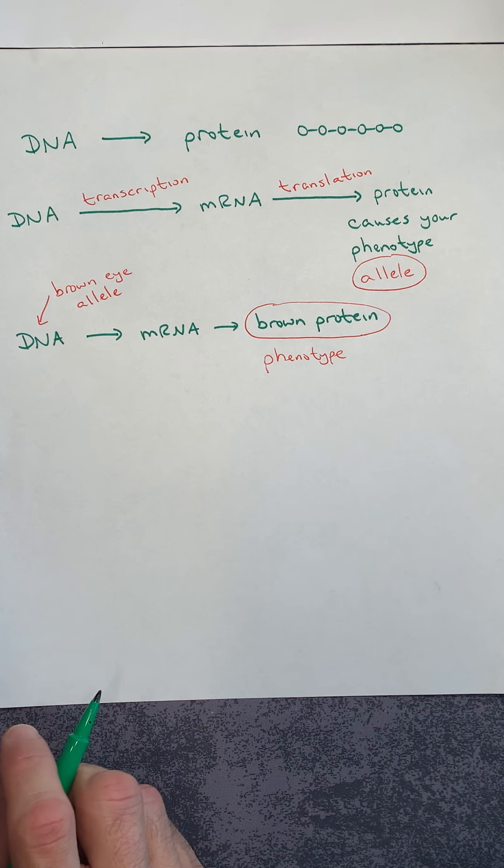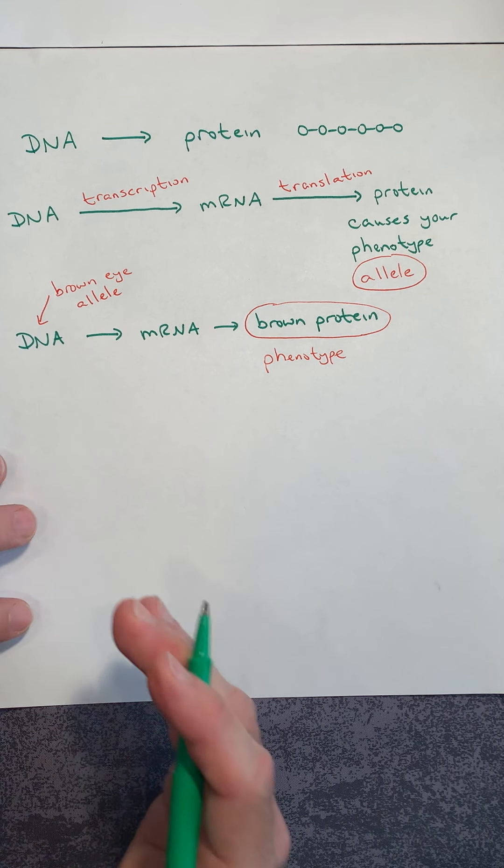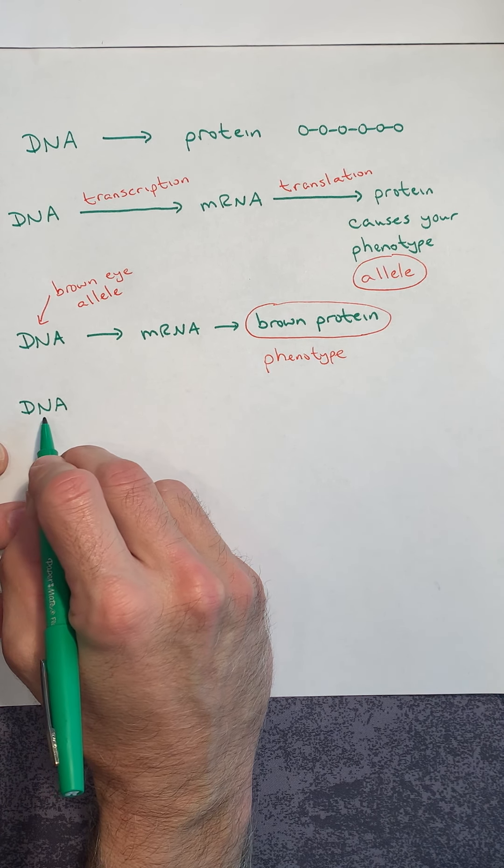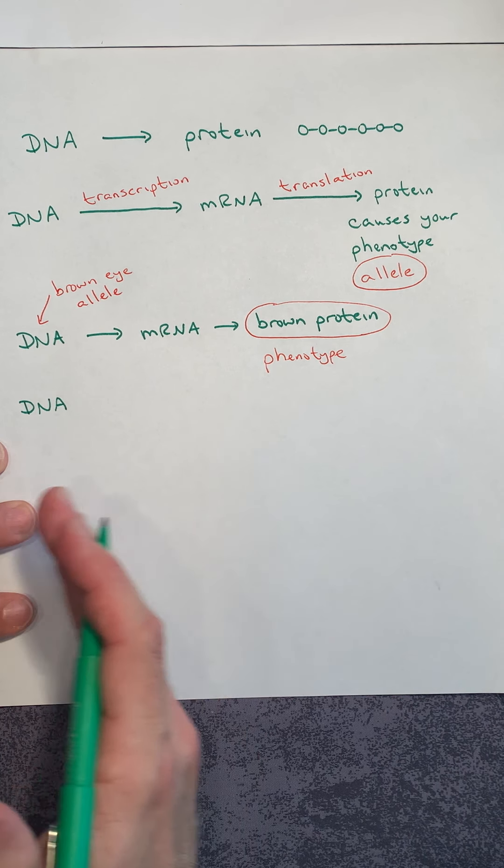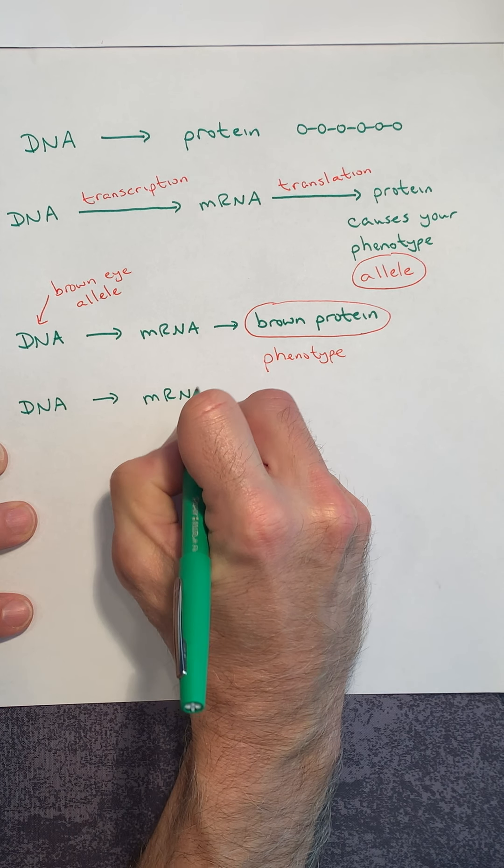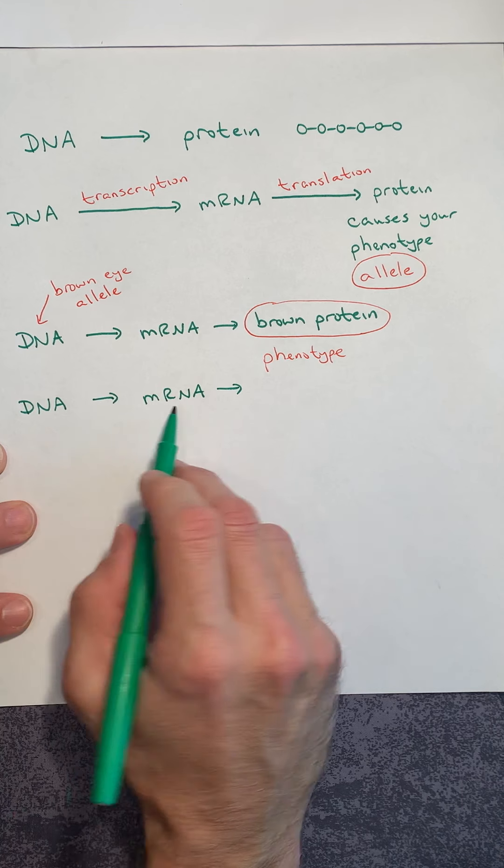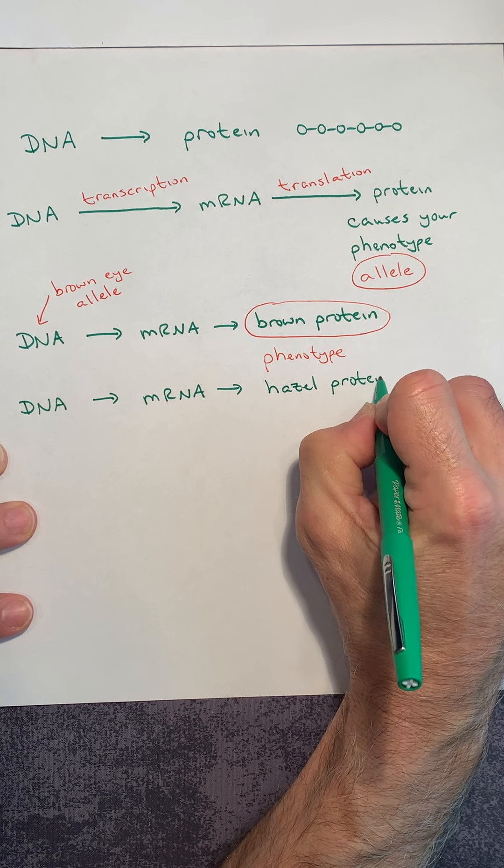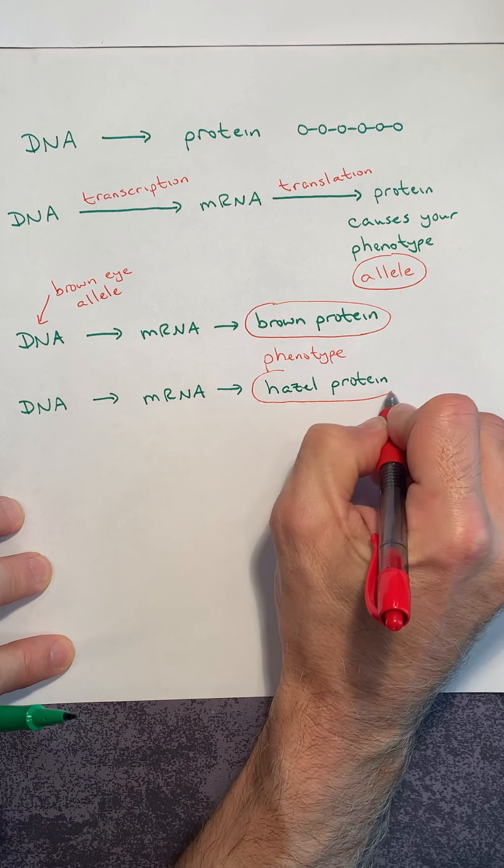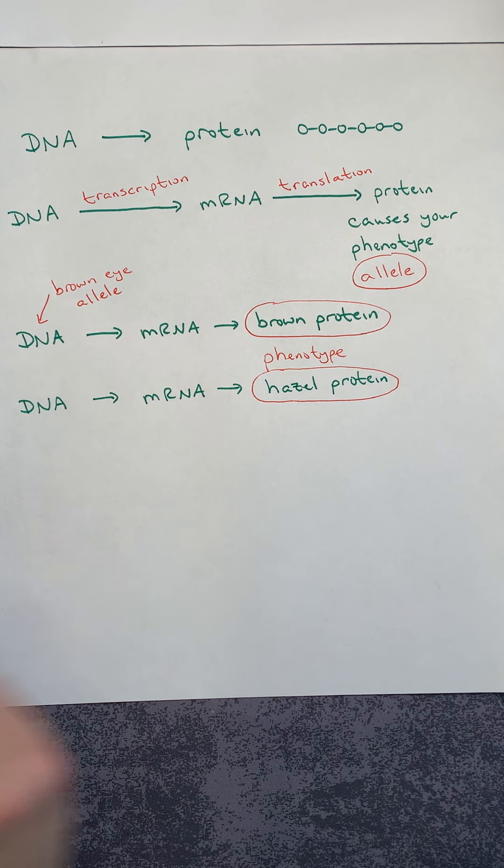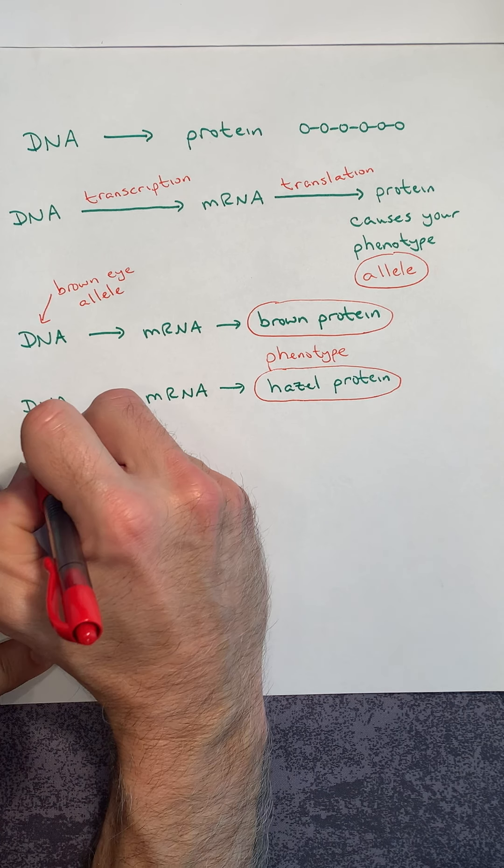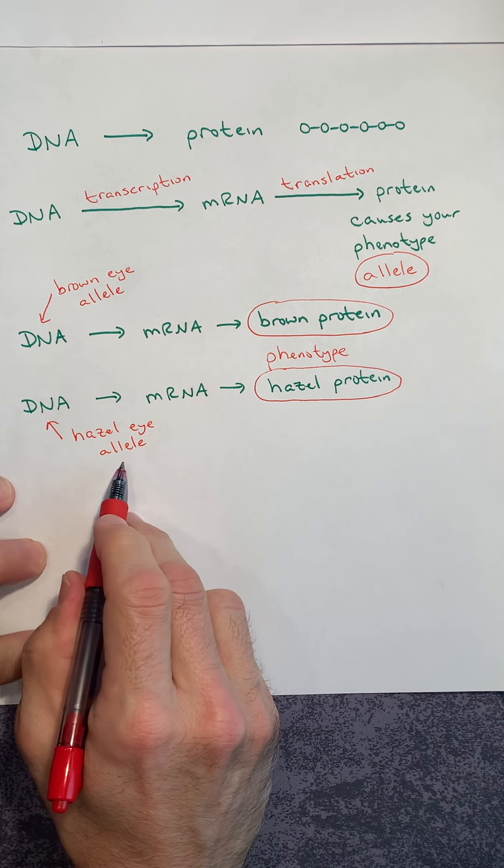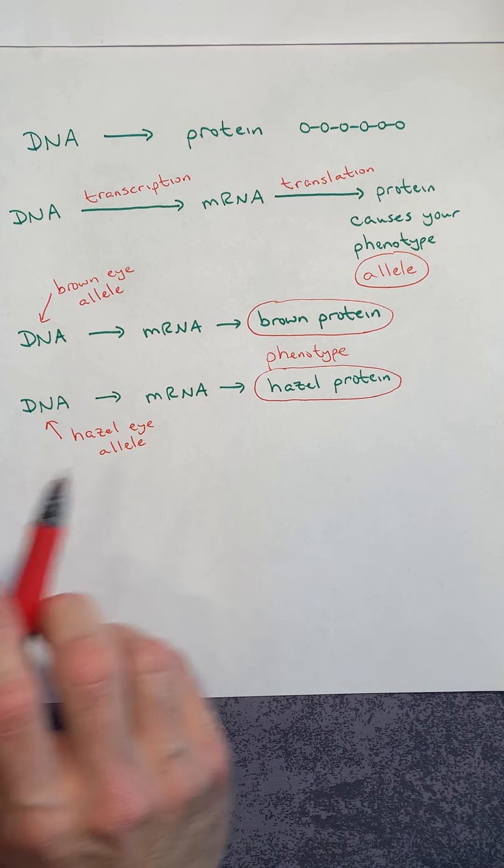And you say, well, I don't have brown eyes. My eyes are hazel, or my eyes are blue, or my eyes are green. What does that mean? That means that from your biological parents, you inherited a different section of DNA. The A's and T's and G's and C's are in a different order. Therefore, you make a different form of messenger RNA. Well, if you make different RNA, you then make a different protein. Let's say that you make a hazel protein. Well, guess what, we then say you have hazel eyes. That is your phenotype. And that phenotype is caused by what we would then call the hazel eye allele. So all an allele really is, is a section of DNA that codes for a protein.